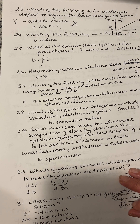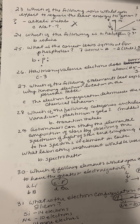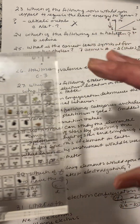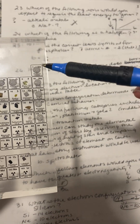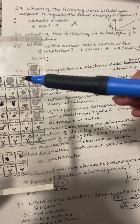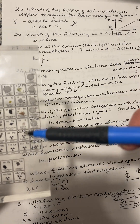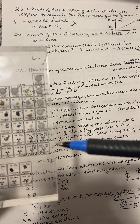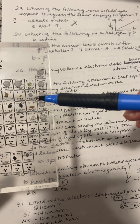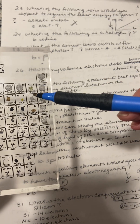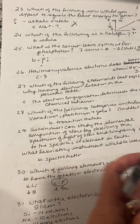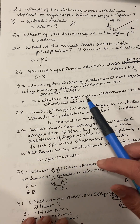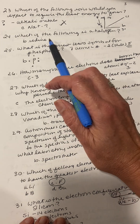Number twenty-four: which of the following is a halogen? Halogens are over in column 17. Column 18 is noble gases, column 17 is halogens. Looking through the options, iodine is in that column — iodine is a halogen. Just look at the row on your periodic table.